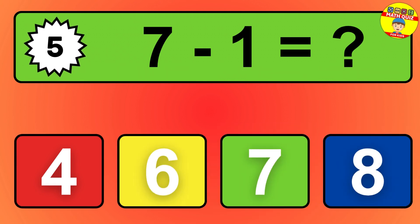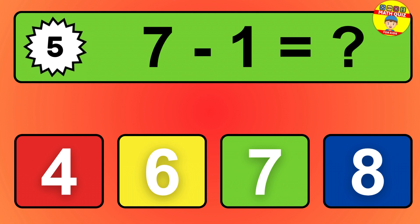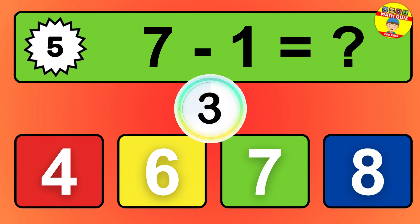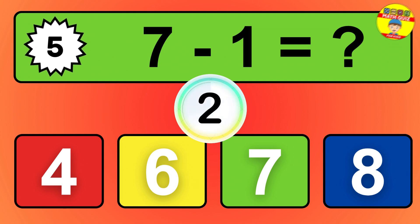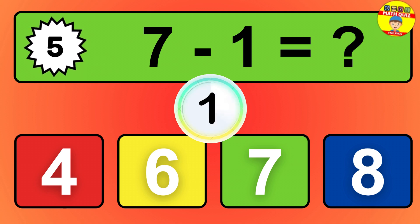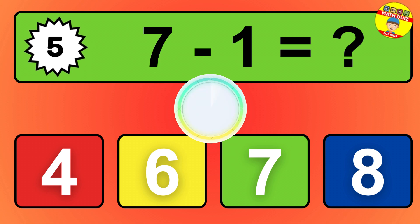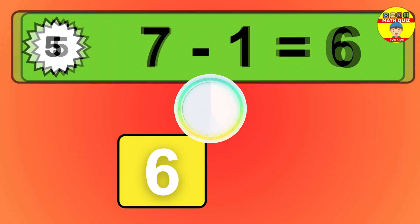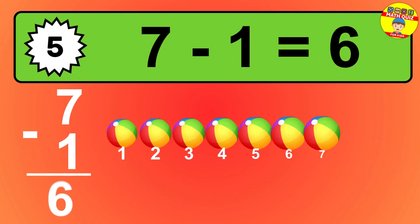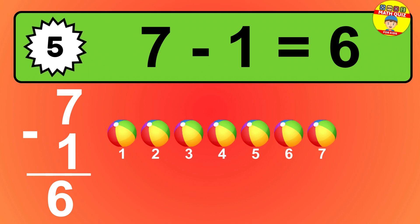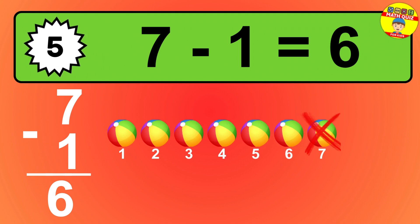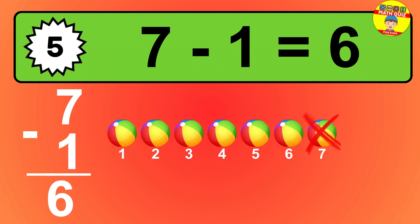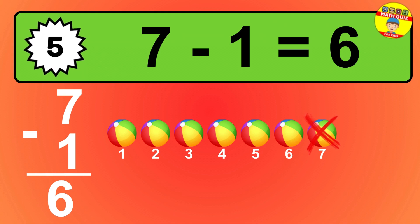Question 5. 7 minus 1 equals what? So the answer is 7 minus 1 is 6. Let's count it. 1, 2, 3, 4, 5, 6.